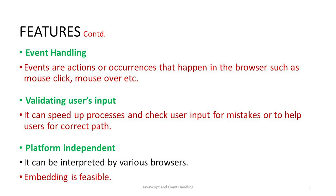The next feature is event handling — the most important feature, and the only one through which JavaScript can be executed. Events are actions or occurrences in the browser, such as mouse click, mouse over, load, rollover, and keyboard events like key press or key up. Another feature is validating user input, which speeds up processes and guides users toward the correct path.